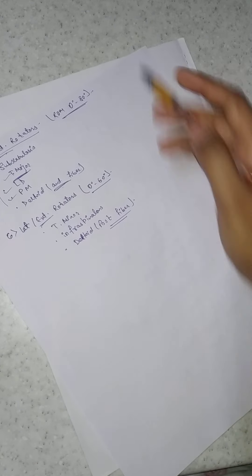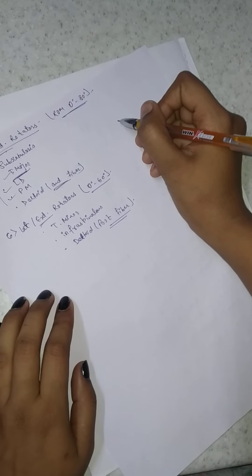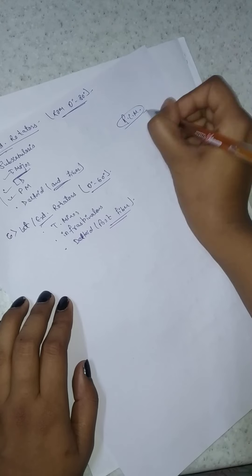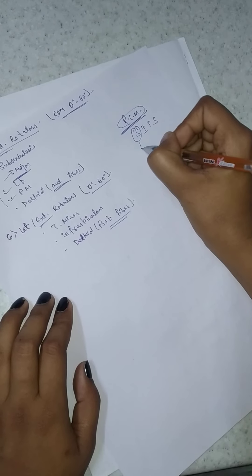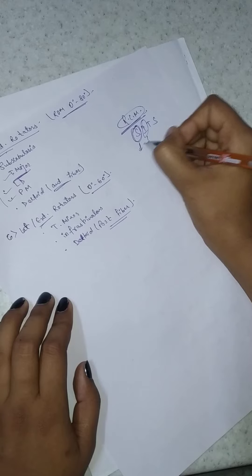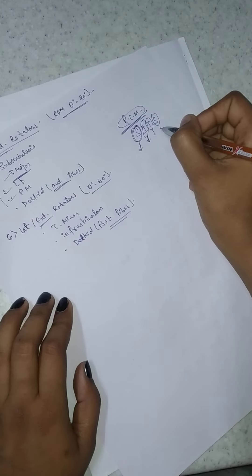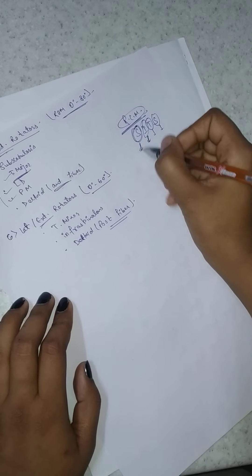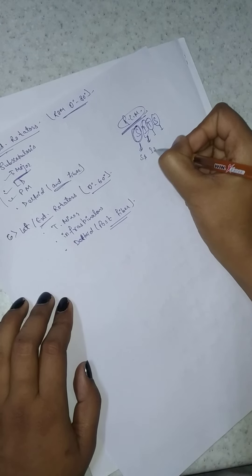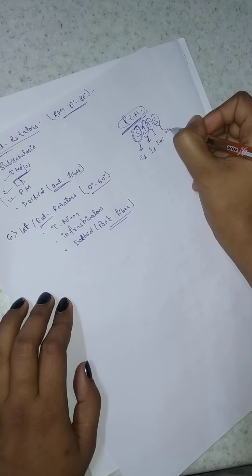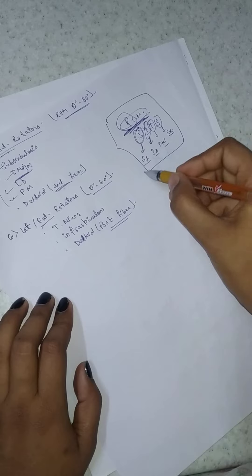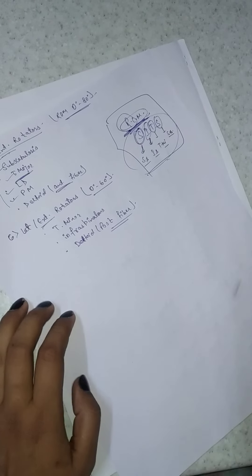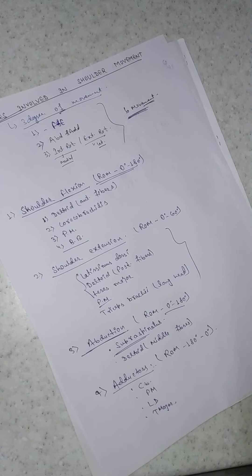We all know about the rotator cuff muscles. There is a trick using the mnemonic 'SITS': S is for supraspinatus, I is for infraspinatus, T is for teres minor, and S is for subscapularis. These are the rotator cuff muscles and they all help with rotation. I think this video is helpful for you guys. Thanks for watching — please like, share, and subscribe to my channel. Thank you, see you next time.